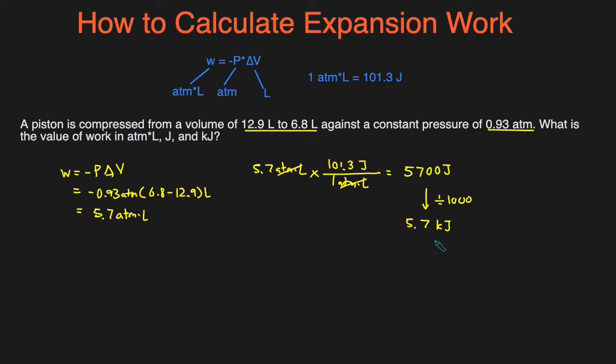That's how you would calculate expansion work. If there's a change in volume against a constant pressure, just use this equation. You can use this conversion factor to change the atm·L into joules, and then divide by a thousand if you want kilojoules.